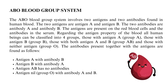The ABO blood group system involves two antigens and two antibodies found in human blood: antigen A, antigen B, antibody A, and antibody B. The antigens are present on the red blood cells and the antibodies in the serum. All human beings can be classified into four groups: those with antigen A (group A), those with antigen B (group B), those with both antigen A and B (group AB), and those with neither antigen (group O).